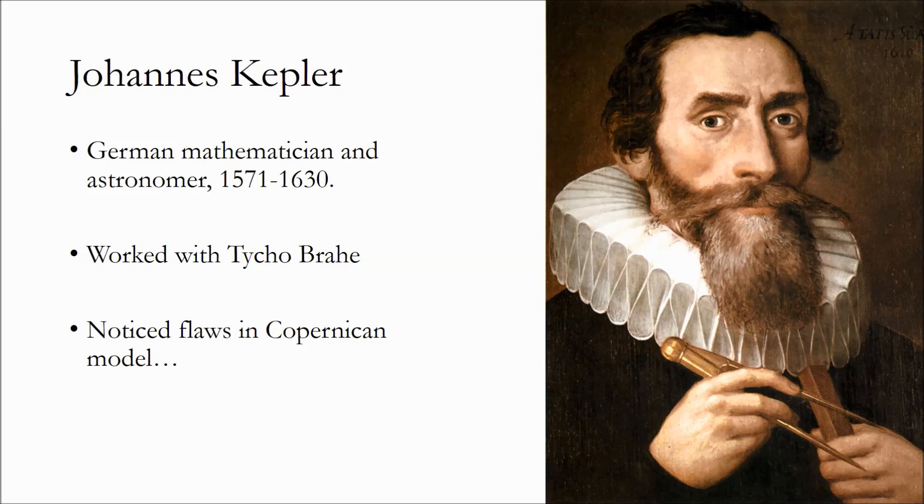He realized that the planets orbited in ellipses rather than perfect circles. A decade after he published the first two laws, further analysis of the data, coupled with more research into the harmony of geometry and physical phenomena, Kepler formulated what became his third law. So, let's see what the laws are.